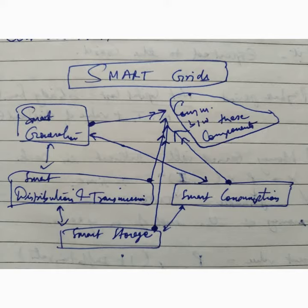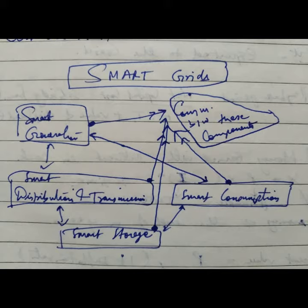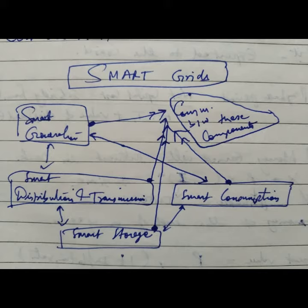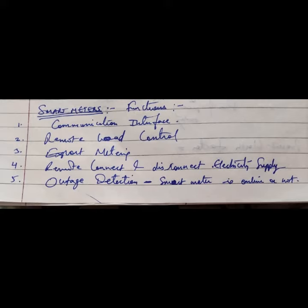Smart grids. The block diagram shows the components of smart grids: smart generation is connected to smart distribution and transmission, smart distribution is connected to smart storage, smart storage is connected to smart consumption, and smart consumption is connected back to smart generation. All these components are interconnected through a communication system in between them.